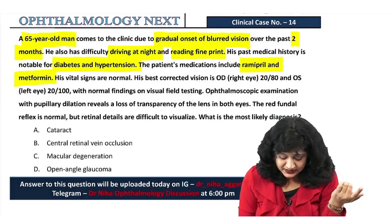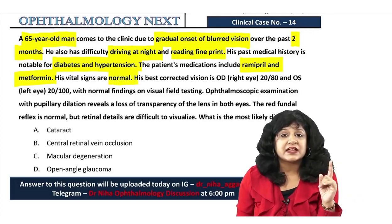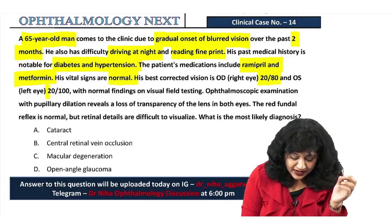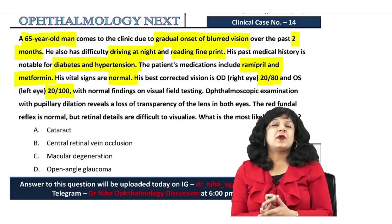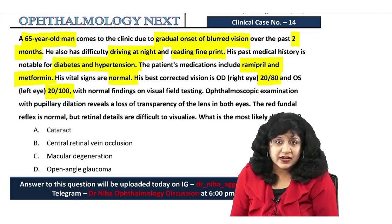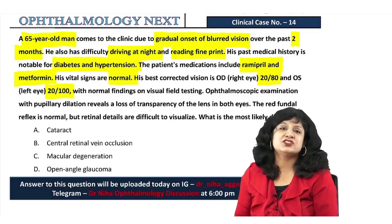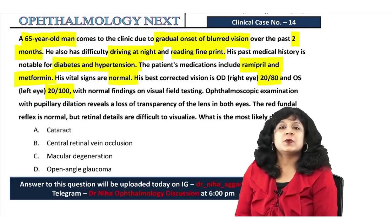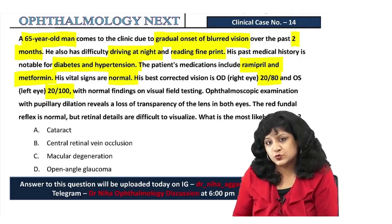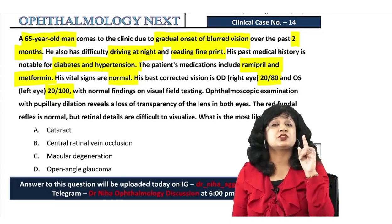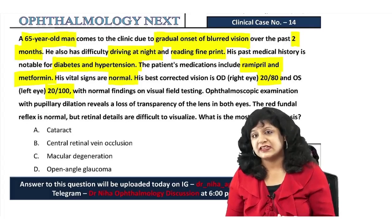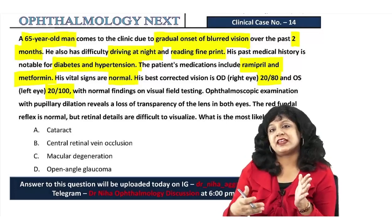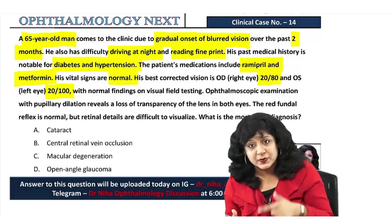Vitals are normal. Best corrected vision in the right eye is 20/80 and in the left eye is 20/100. These are Snellen chart equivalents used in Western countries where distance is measured in feet. 20/20 is the normal visual acuity, and this patient is not achieving best corrected visual acuity of 20/20.